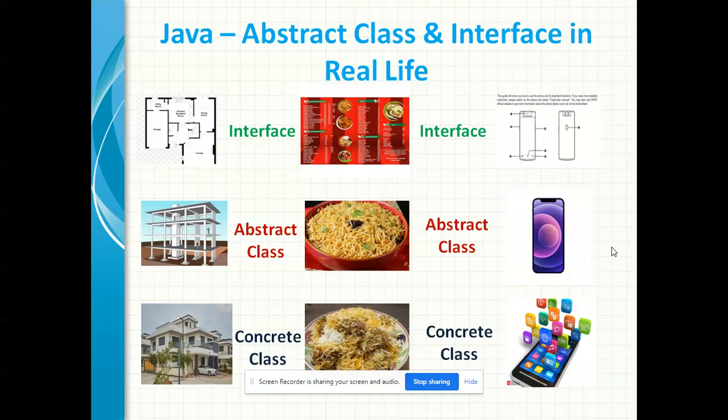By seeing this slide you can easily understand what should be an interface in real life and what can be an abstract class in real life. Let us take a very simple scenario. Assume that I plan to construct a house. First of all I will go to an architect and get the house plan. That house plan is not an implementation — it is just a diagrammatic representation of my house. That diagrammatic representation of my house is the interface.